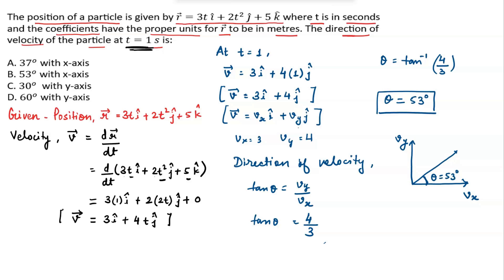Option B, 53 degrees with x-axis, is the correct option. Other options will be incorrect. Thank you for watching. If you found this video helpful, please like, share, and subscribe for more upcoming videos.